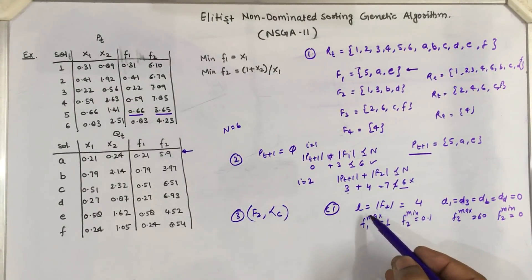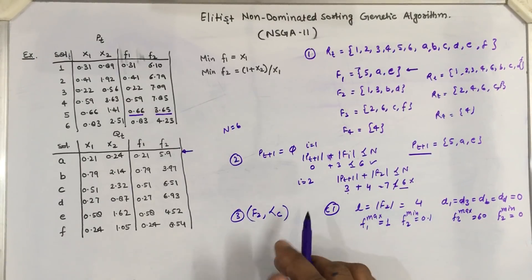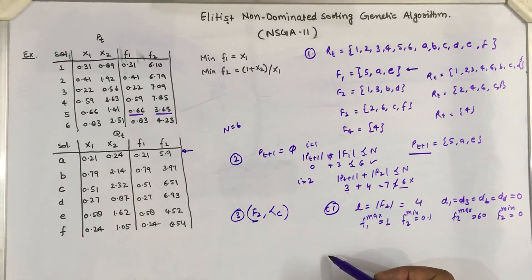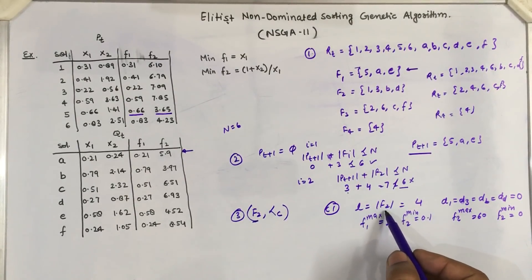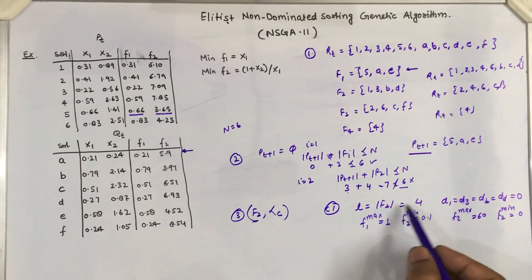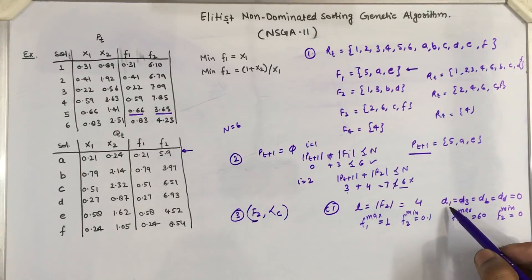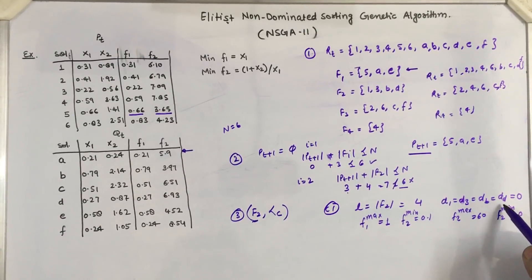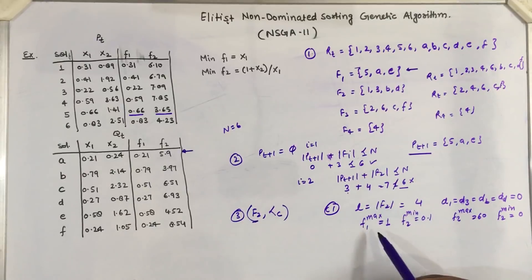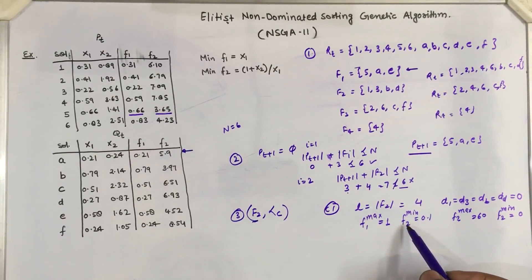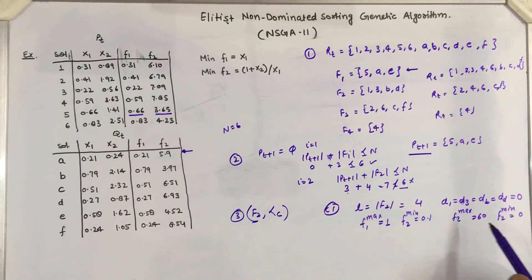To apply the crowding distance operator on front F2, there are three sub-steps. In the first step, we calculate the length of F2 — how many solutions are there in the set F2 — and we assign the initial crowding distance for each solution in this front to 0. Then we initialize variables like the maximum and minimum values for objective functions F1 and F2.